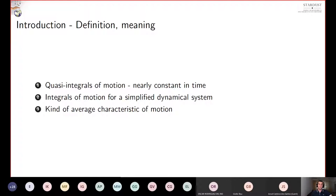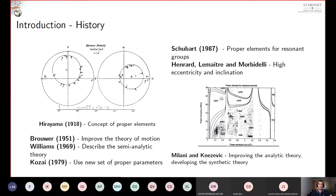As a definition, we can say that the proper elements are quasi-integrals of motion for a dynamical system, but alternatively, one can define them as integrals of motion for simplified dynamical systems. Intuitively, the proper elements are parameters that are nearly constant in time, and they are obtained by kind of average over short and long-periodic perturbations of motion. The most common proper elements are the proper semi-major axis, proper inclination and proper eccentricity, but one can define other set of parameters as proper elements.